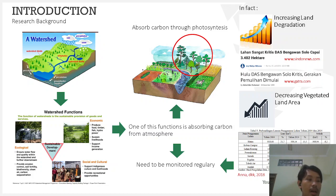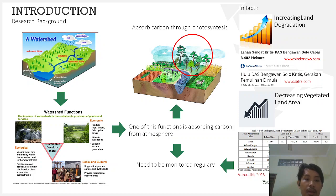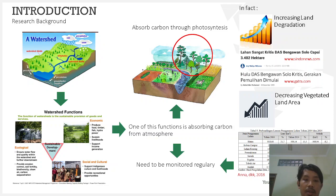A watershed is an area of land that is drained by a distinct stream or river system, and it is usually separated from other watersheds by ridges, hills, or mountains. Watersheds have many functions related to ecological, economic, social, and cultural aspects. One of the important functions of a watershed is carbon absorbing from the atmosphere.